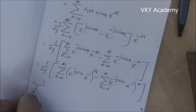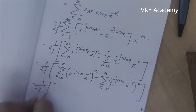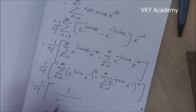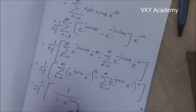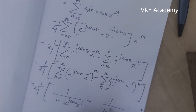Now, applying the known Z-transform result for geometric series, this gives (1/2j) times: 1/(1 − e^(jω₀)z^(−1)) minus 1/(1 − e^(−jω₀)z^(−1)).